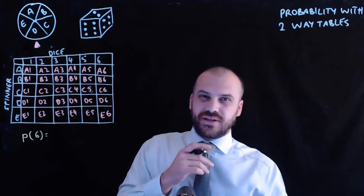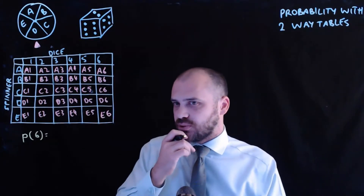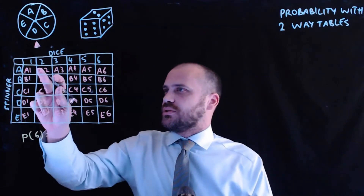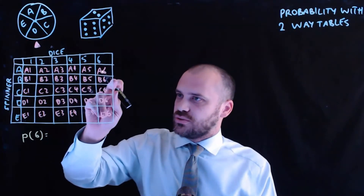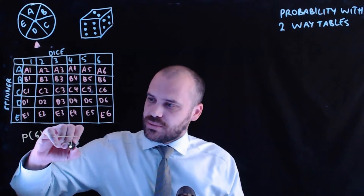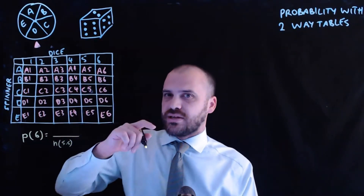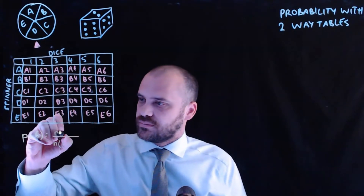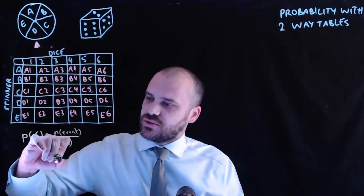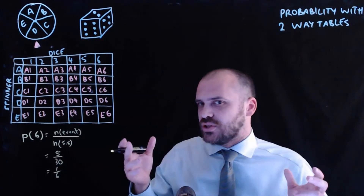I've chosen a simple example to start: the probability of rolling a six. You already know that's one in six, but I'm going to calculate it using the two-way table to verify. The total number of things that can happen is 6 times 5, which is 30 — that's our sample space. The number of ways to get a six is five, one for each letter on the spinner. So the probability is five over 30, which simplifies to one over six. It's nice to check it using the two-way table.